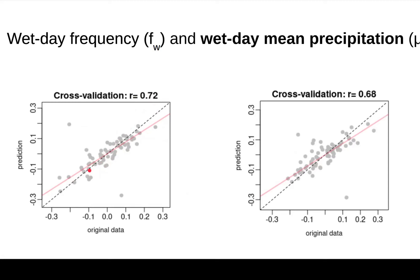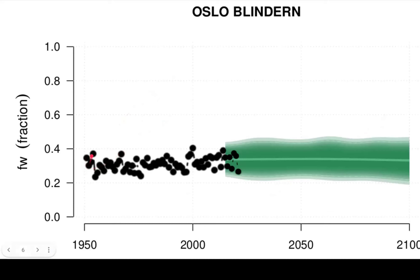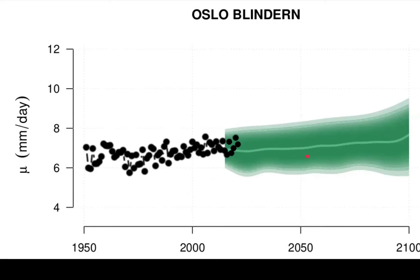We can then calibrate the downscaling models for these two parameters and apply them to global climate models to make projections for the future. Here's one example for Oslo Blindern. The black points are annual wet day frequency from observations, and the green curves are an ensemble of 30 CMIP6 SSP370 runs. There's hardly any trend in the past or in the future, so these results are fairly realistic. A similar analysis for the wet day mean precipitation indicates a slight trend in the past, and the models also indicate a slight trend in the future, though some models may not reproduce the wet day mean precipitation as well as others.